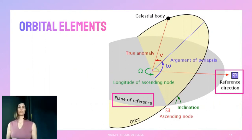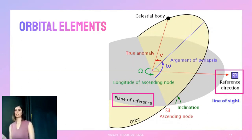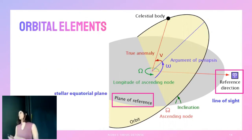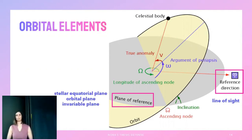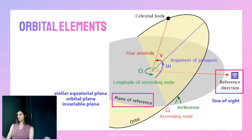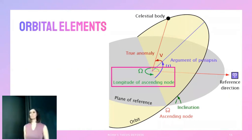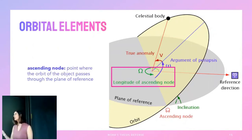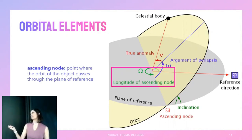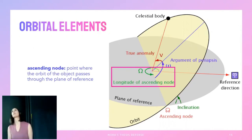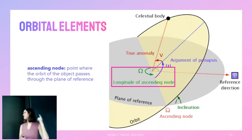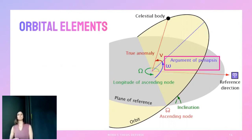Some reference choices are more logical than others. For the reference direction, if you're looking at another planetary system you might use the line of sight between Earth and that system. For the reference plane you could use the equator of the star, one of the planet's orbital planes, or the invariable plane — which is perpendicular to the system's total angular momentum vector. Total angular momentum is conserved, so this plane is always constant, hence 'invariable.' The first angle is uppercase Omega, the longitude of ascending node, where the ascending node is the point where the orbit passes upward through the reference plane.